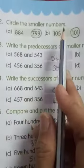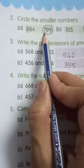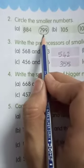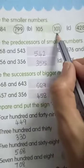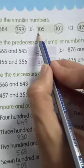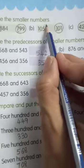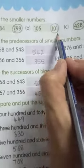Circle the smaller numbers. First, compare the digits on the hundreds place. We have 8 and 7; 7 is smaller than 8, so 799 is the smaller number. Next, 105 and 101: on hundreds and tens we have the same digits, so we compare the ones place. 1 is less than 5, so 101 is the smaller number.